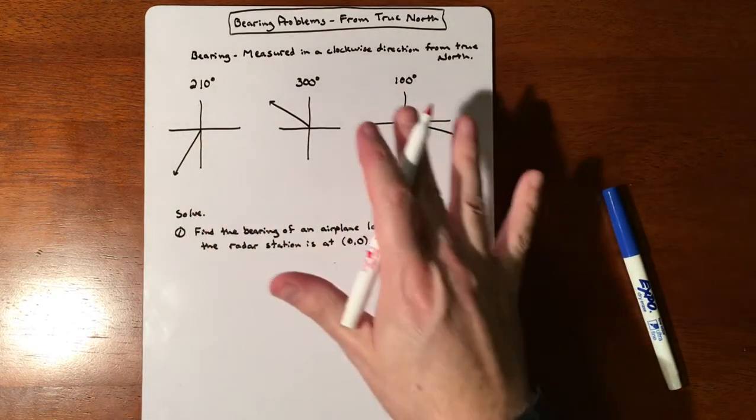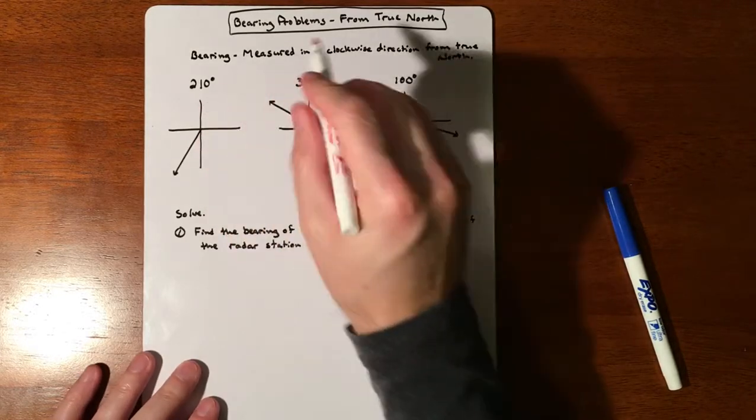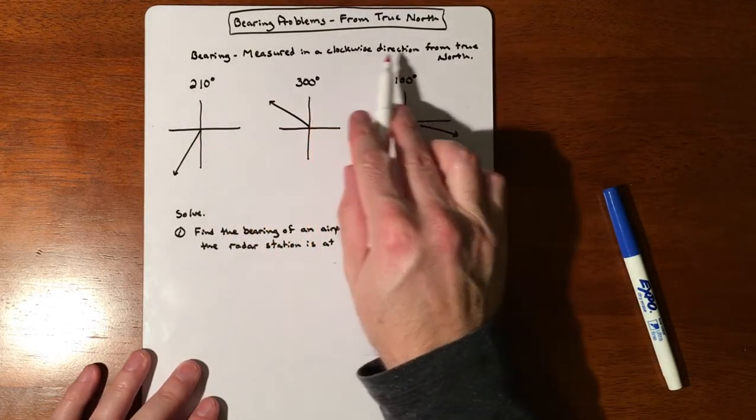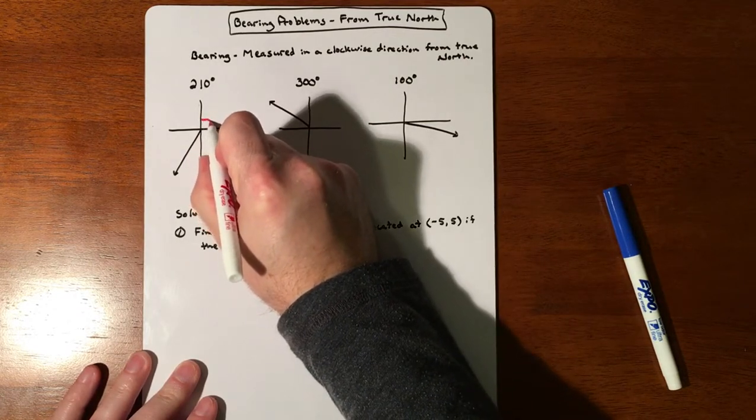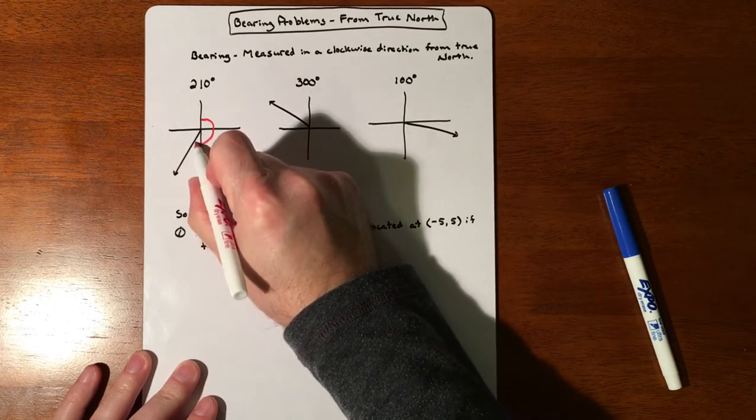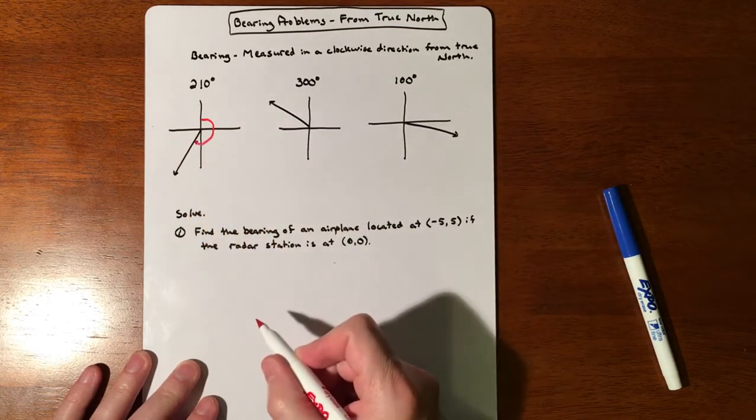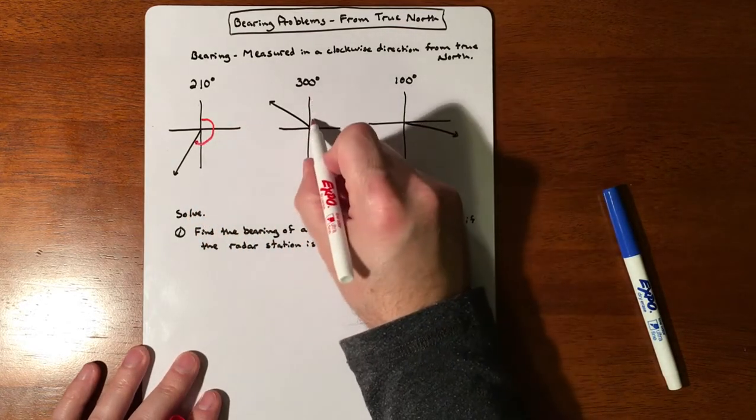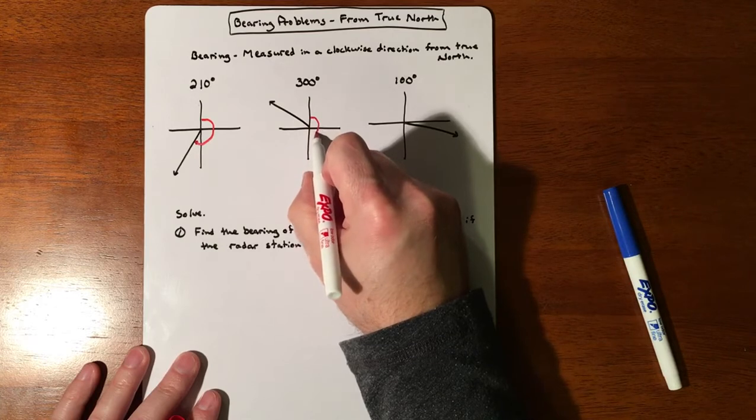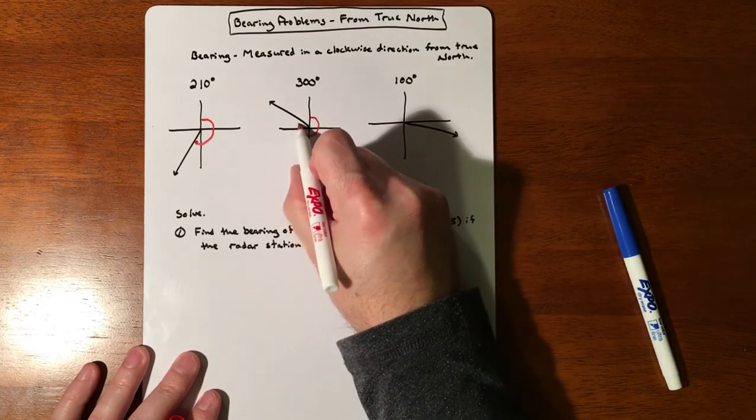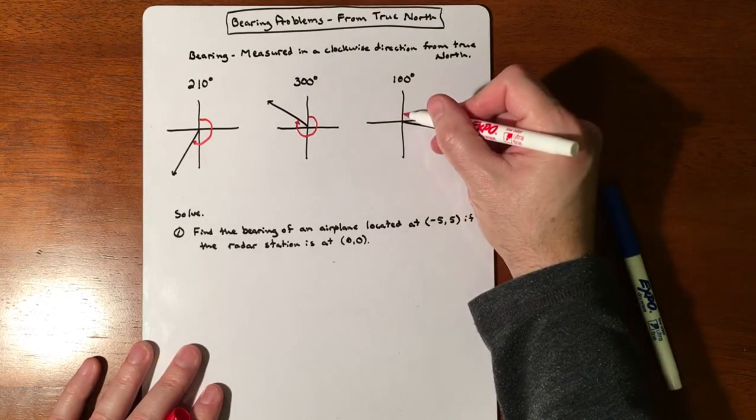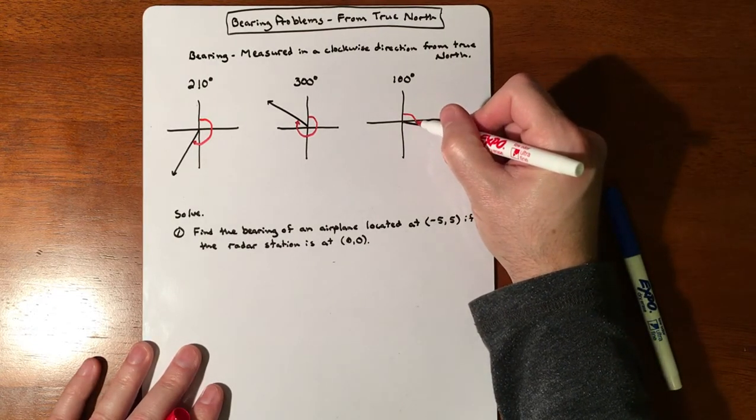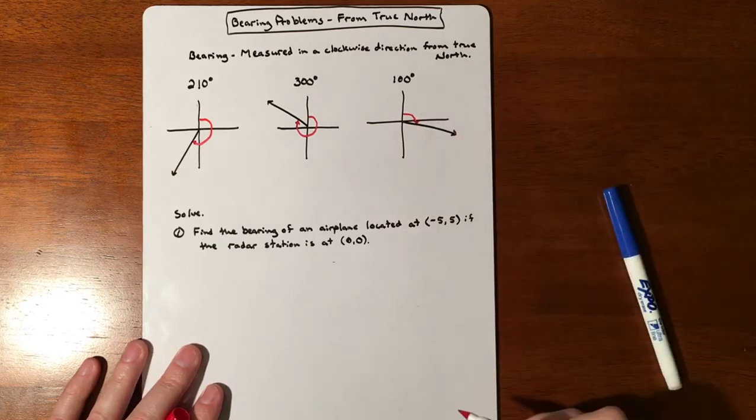Everything we're going to do, we're drawing from the north and heading in a clockwise direction from true north. So to get to 210 degrees, we go 180 and then 30 degrees past that. To do 300, we go 180, 270, and then 30 degrees past that. To go 100, you go 90 and then 10 degrees past that.